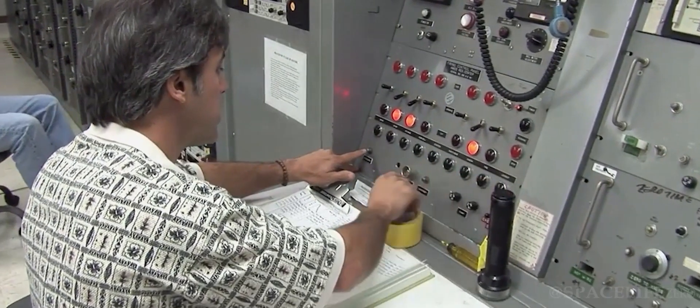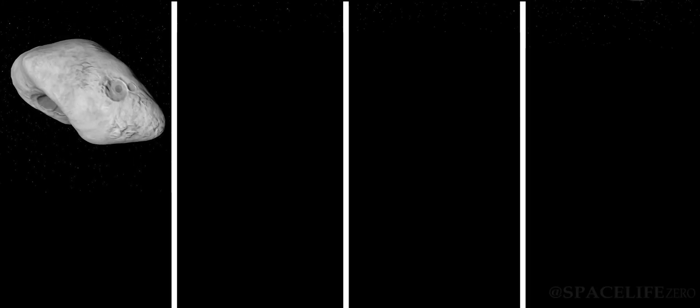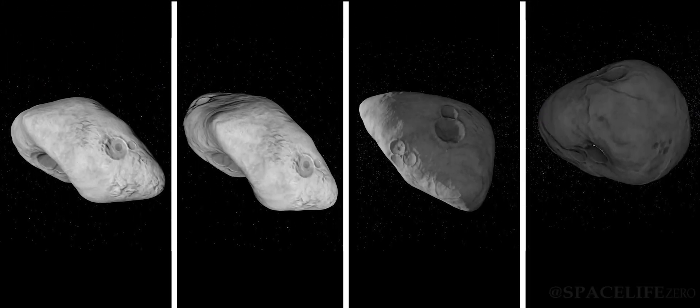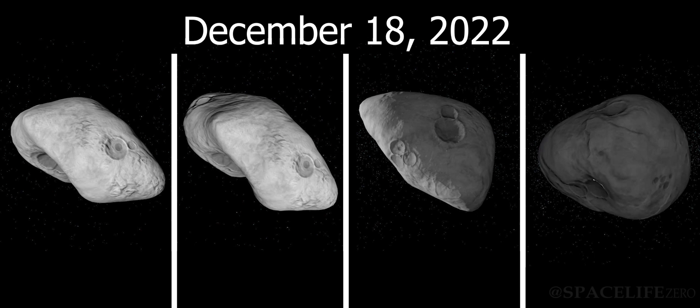As per the information received from NASA's JPL, four asteroids will approach close to the surface of our planet Earth on December 18, 2022.